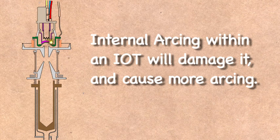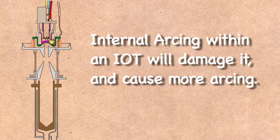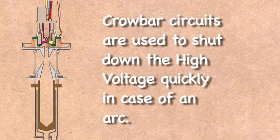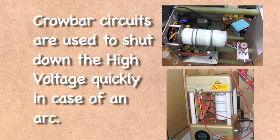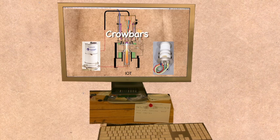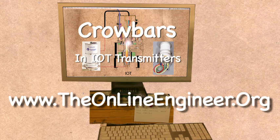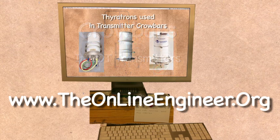With such high voltage in such tight spaces, there is always a possibility of internal arcing. Great care is taken in the design and construction of the IoT to reduce the possibility, but it can still happen. That is why crowbar protection circuits are used in every IoT transmitter to quickly stop any arcs that do occur. You can learn more about crowbars from our video tutorial, Crowbars in IoT Transmitters, on our website.